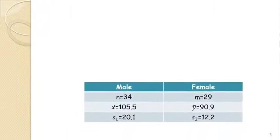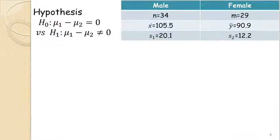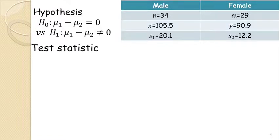From this summary table, we can test whether the population variances are equal or not, and based on that we will proceed with our test.